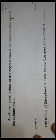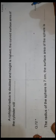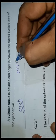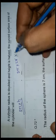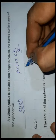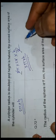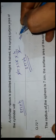Question 71: a cylinder's radius is doubled and height is halved. New CSA = 2π(2r)(h/2) = 2πrh. The curved surface area remains the same as the original.